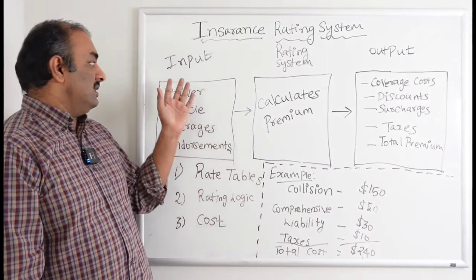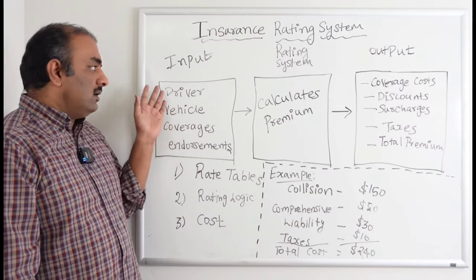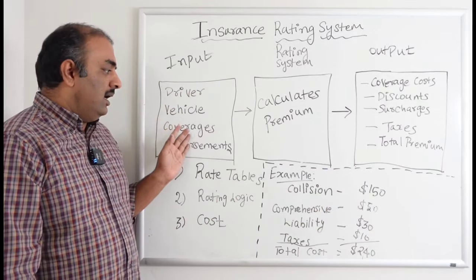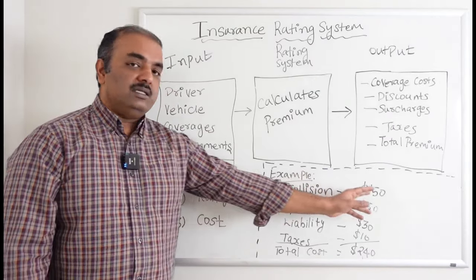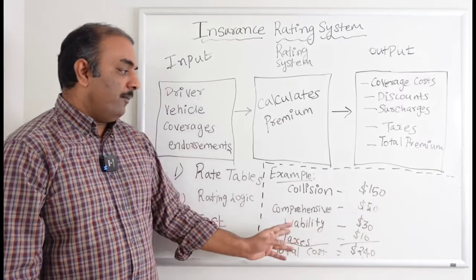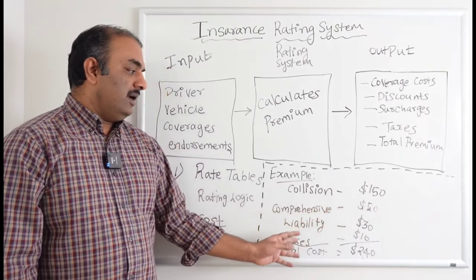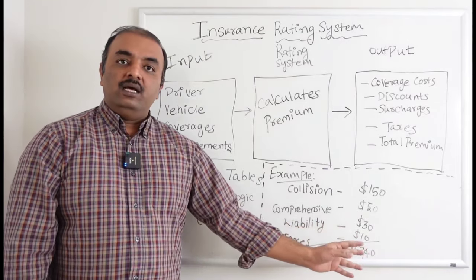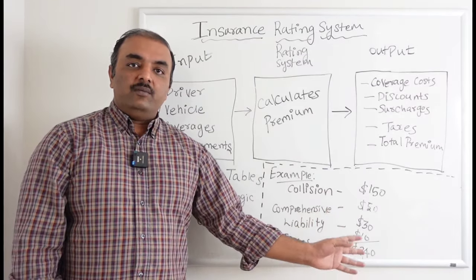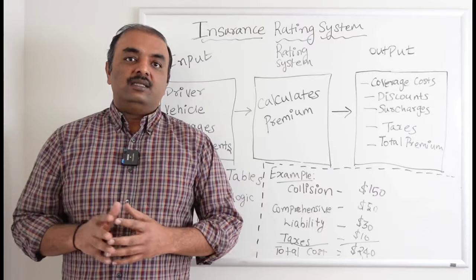If you take a personal example, the moment you pass all the premium-bearing attributes, the rating system is going to say for collision coverage this is $150 premium, for comprehensive $50, for liability $30, the total taxes is $10, so the total premium will be $240. This $240 will be the premium that will be sent back to the policy system so that it can be sent to the customer for payment.